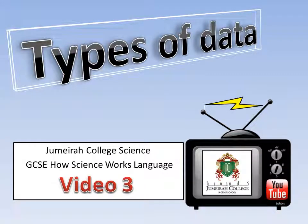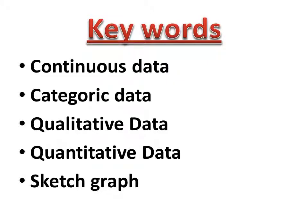Data can come in many different types. You need to know the correct words to put them into the correct data categories. We need to know about continuous data, which is related to quantitative data, and categoric data, which is related to qualitative data. We also need to know about sketch graphs.